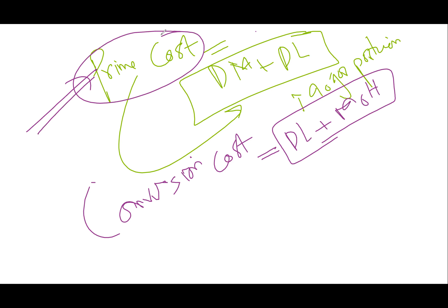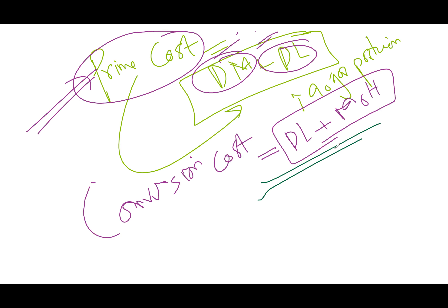Conversion cost is direct labor plus manufacturing overhead. In a manufacturing business producing goods like steel or furniture, prime cost is highest, and managers focus on controlling material and direct labor costs. The factory rent and indirect materials like cleaning agents and janitors are not the heavy costs.